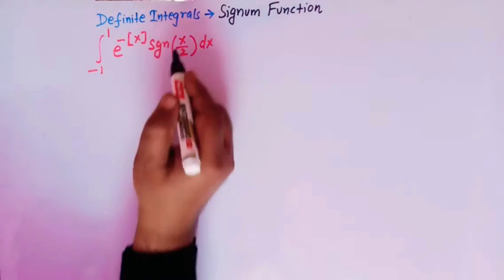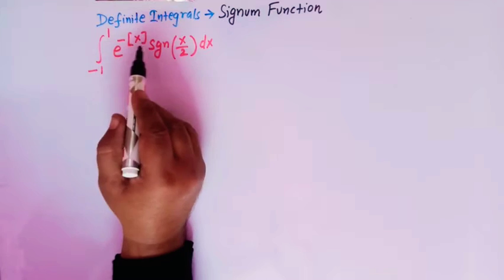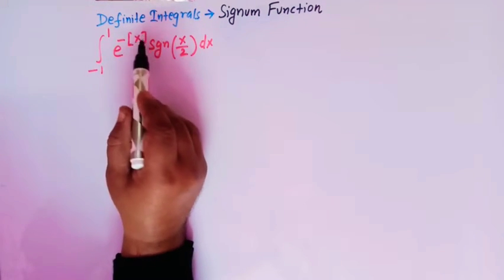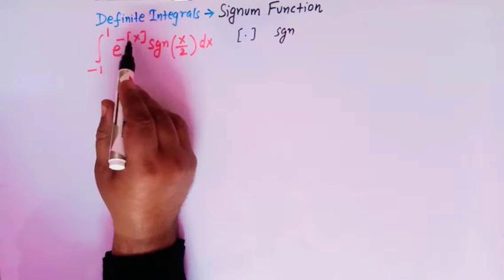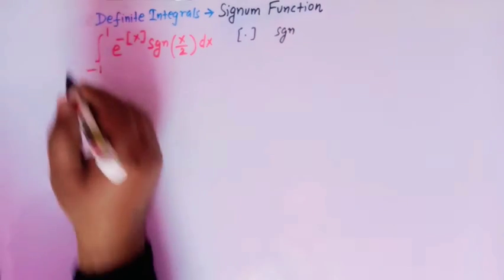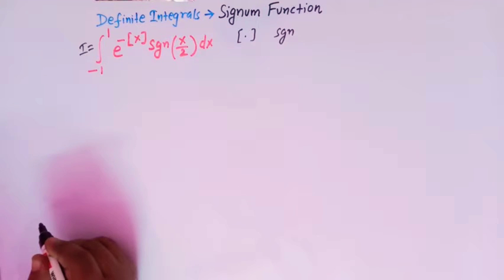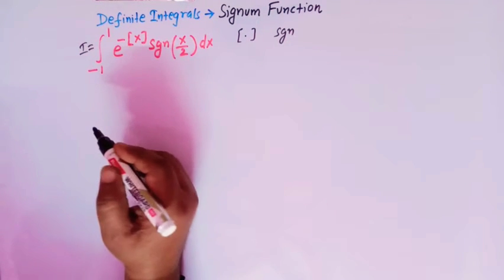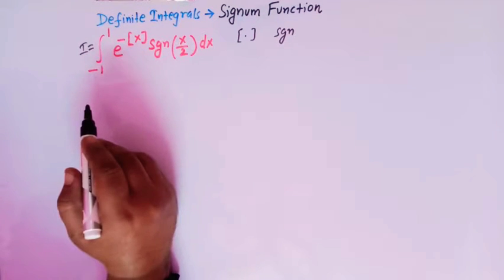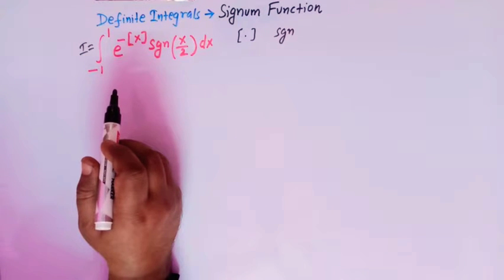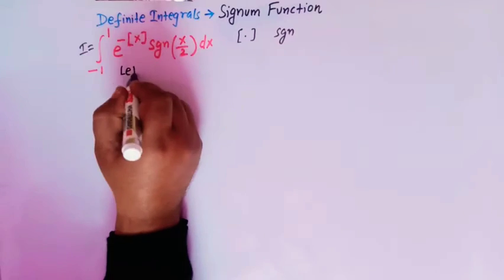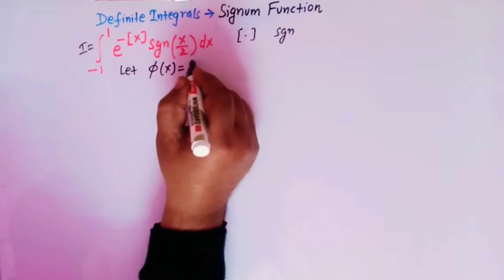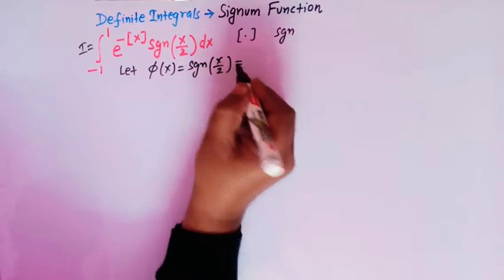We see that the integrand comprises the greatest integer function and the signum function — a combination of these two special functions. Let us call this integral as i. We need to make use of the definitions of both functions, as they require special attention. Let us denote the function signum of x over 2 by phi of x.